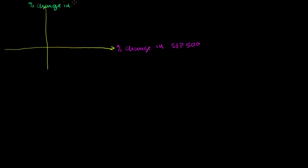So let's say on one day when the S&P goes up 1%, IBM goes up 2% — we'll mark that point right over there. And then on another day, the S&P 500 goes up 2%, and IBM also goes up 2%.